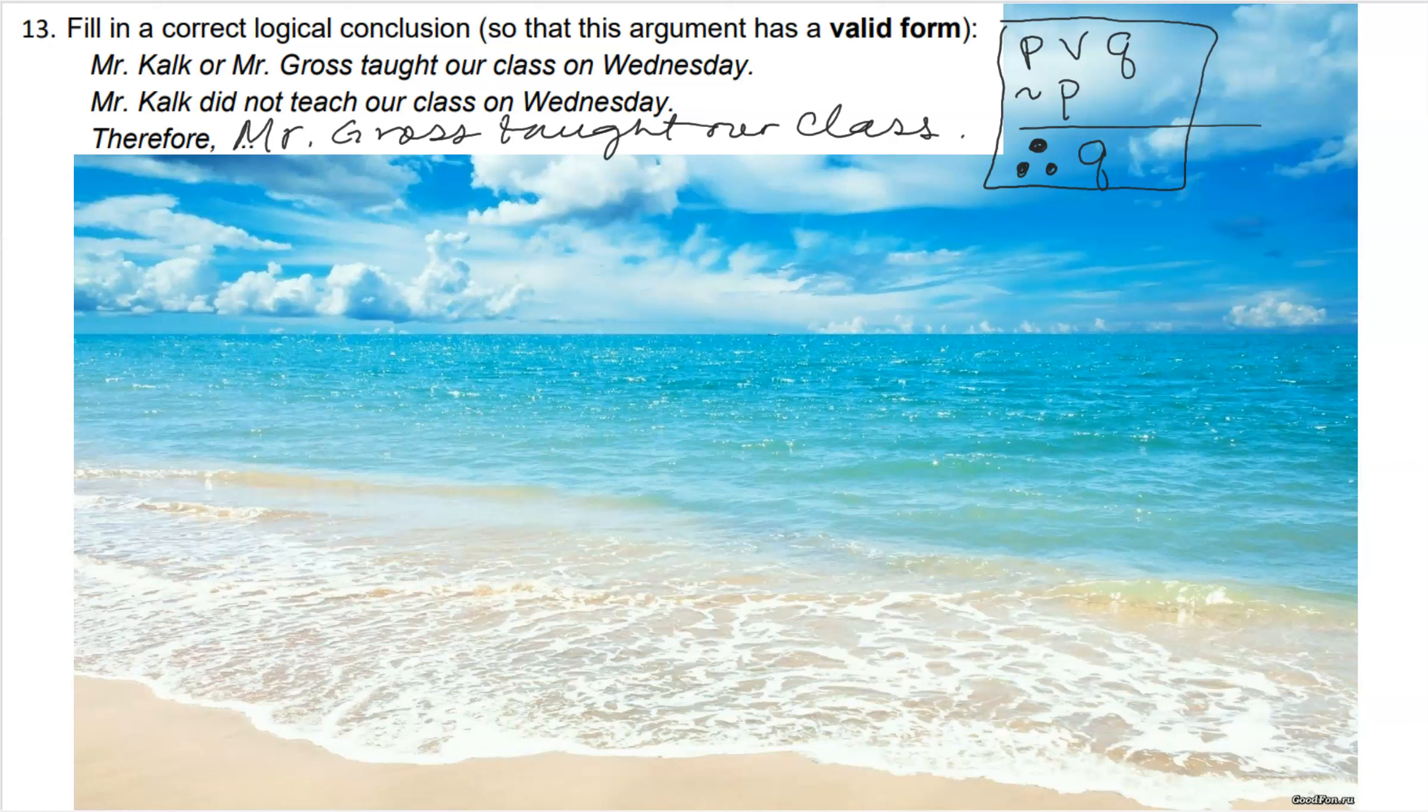In order to prove that that is a valid form we need to build a truth table for the statement that said premise one and premise two.